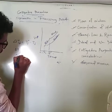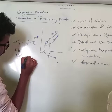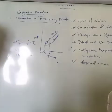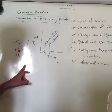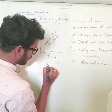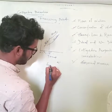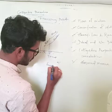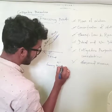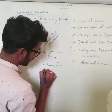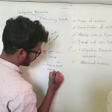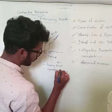Adding the proportionality constant Kf, we get ΔTf equals Kf into molality. This Kf is known as the depression constant, freezing point constant, or cryoscopic constant.